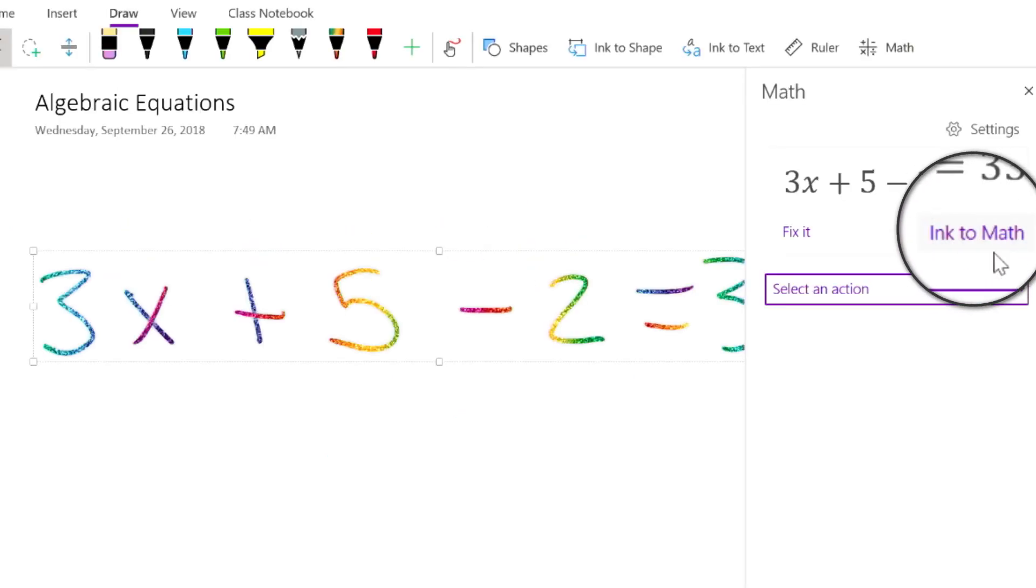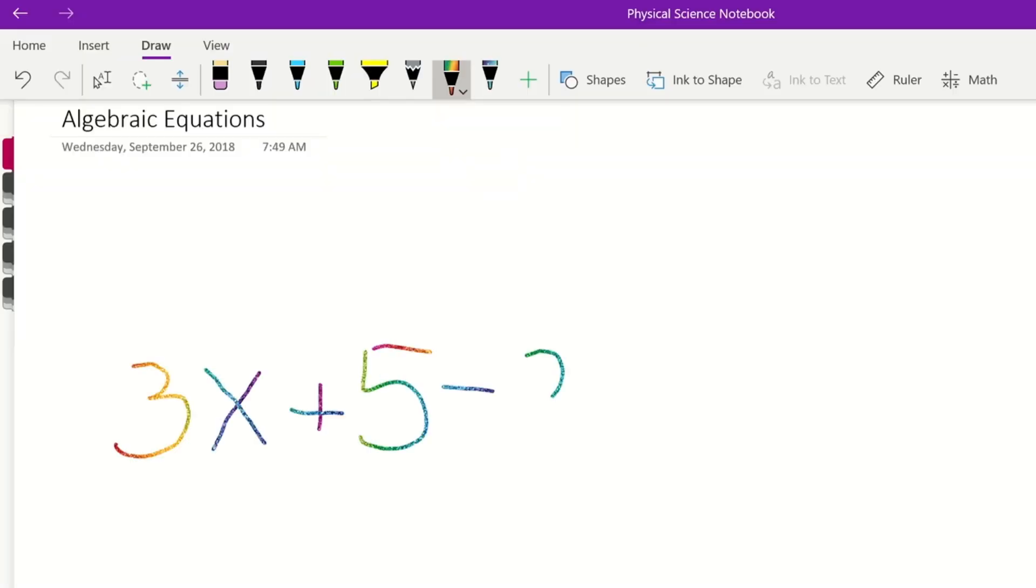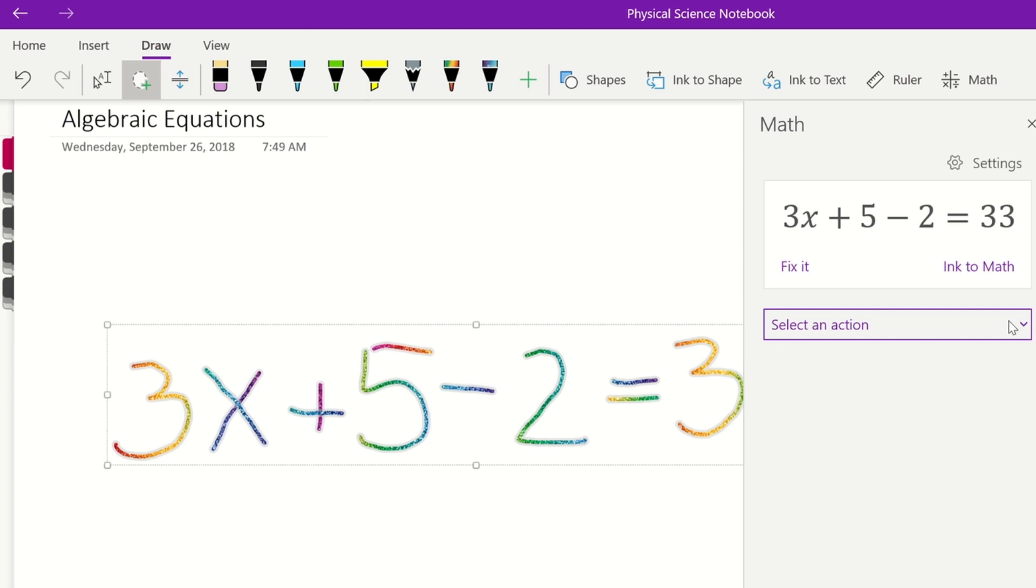You can also convert handwritten equations to text with ink to math. Write your equation in ink or type it with the keyboard. Select your equation. Click math under the draw tab. In the select an action drop down, choose solve for x to see the solution.